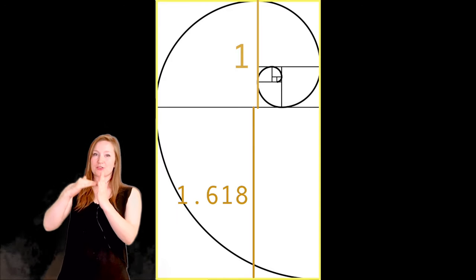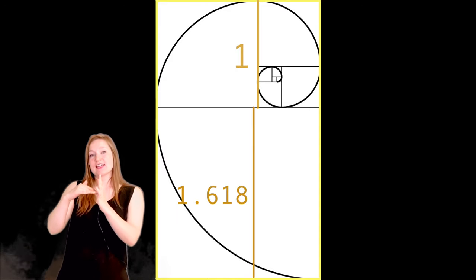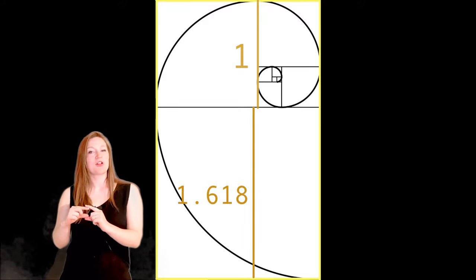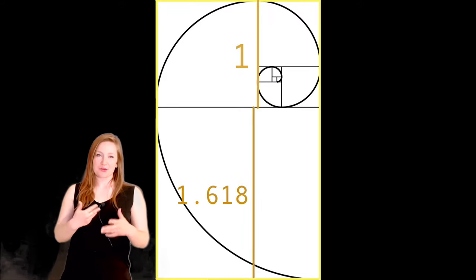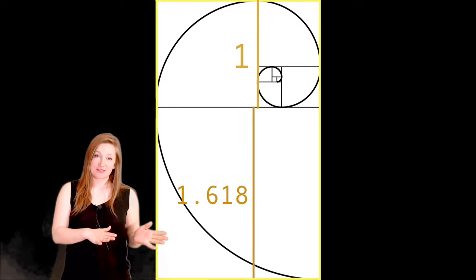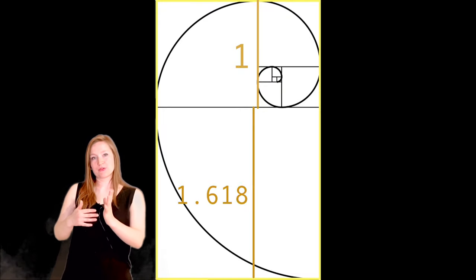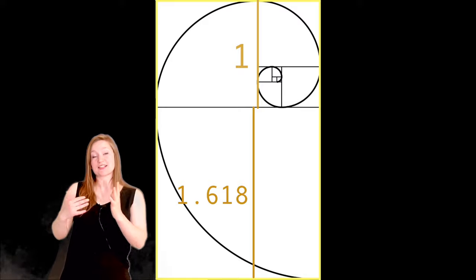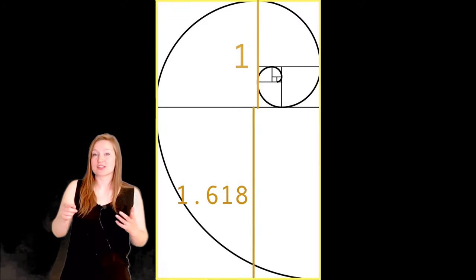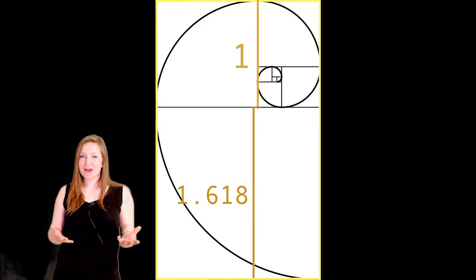You can later divide that into another square, yielding a smaller golden rectangle, and it keeps going and going. That's the premise of it. Once we have the golden rectangle broken down into squares and rectangles, we can draw the spiral within it.